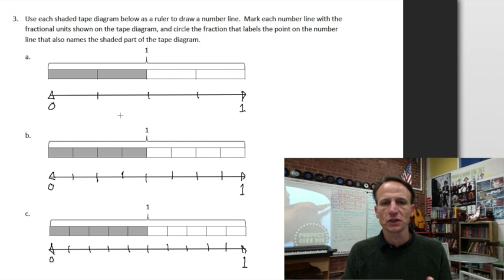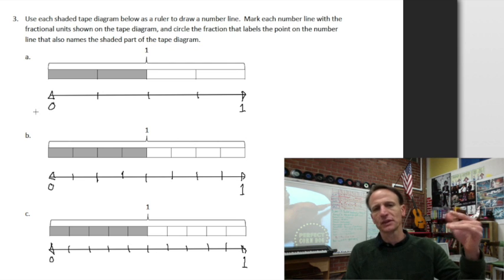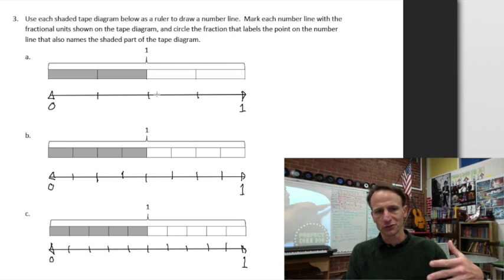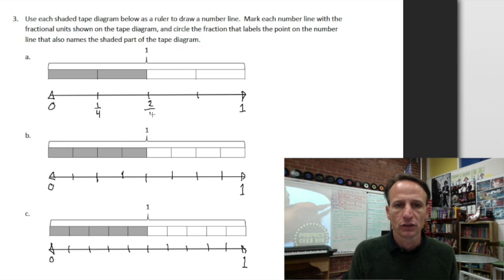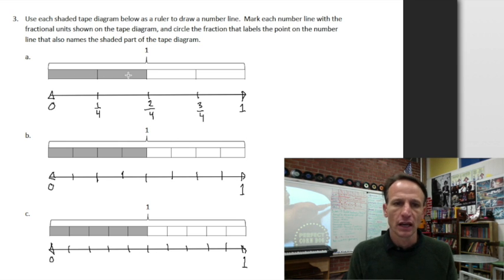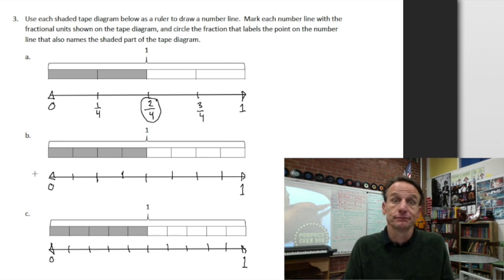So now this one has one, two, three, four parts — we're talking about fourths. This time, since we did the zero and full-whole labels on number one, I'm going to skip zero-fourths and four-fourths and just label the fractional units as instructed: one-fourth, two-fourths, and three-fourths. The fraction represented is two out of four — two-fourths — so I circle that one.